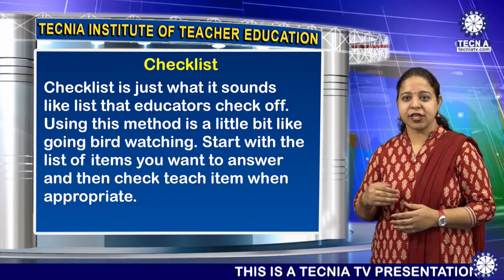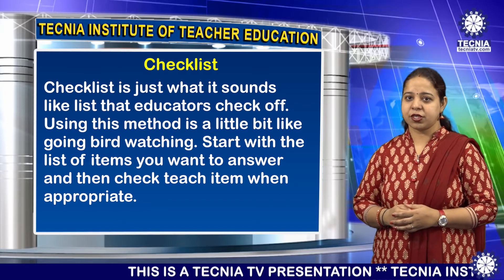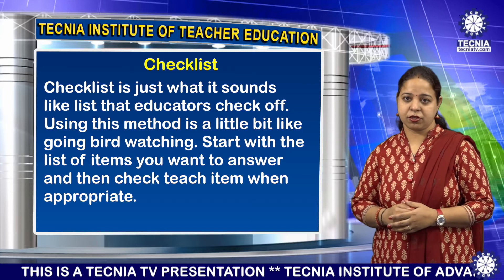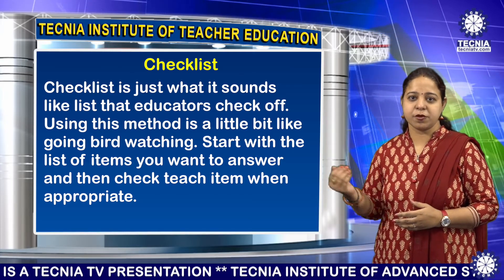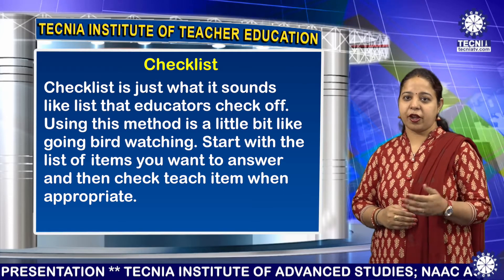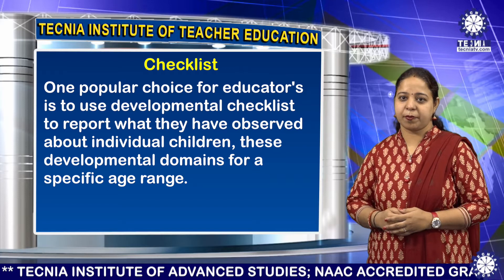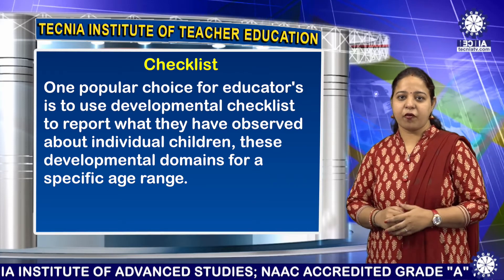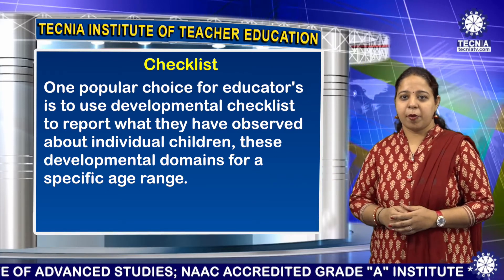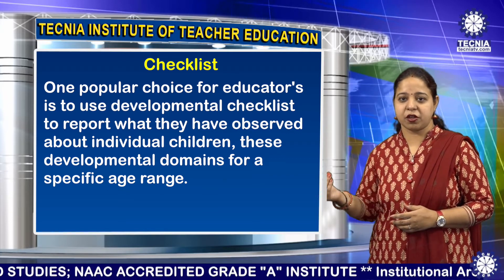Checklist is just what it sounds like — a list that educators check off. Using this method is a little bit like going bird watching. Start with the list of items you want to assess and then check off each item when appropriate. One popular choice of educators is to use a developmental list of what they have observed about individual children, covering developmental domains for specific age ranges.